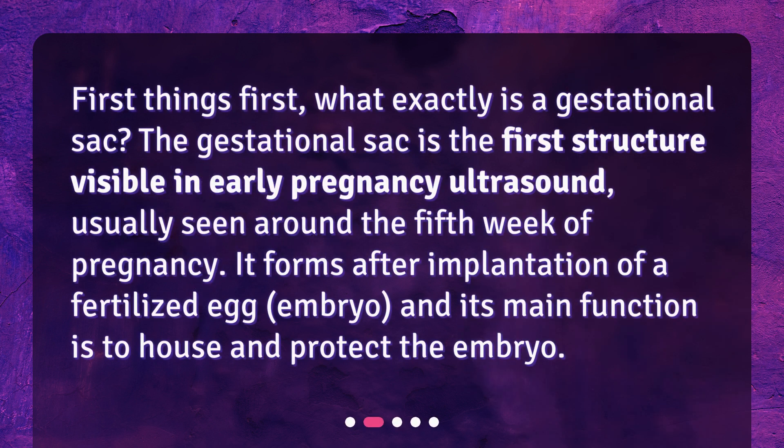What is a gestational sac? The gestational sac is the first structure visible in early pregnancy ultrasound, usually seen around the fifth week of pregnancy. It forms after implantation of a fertilized egg, and its main function is to house and protect the embryo.